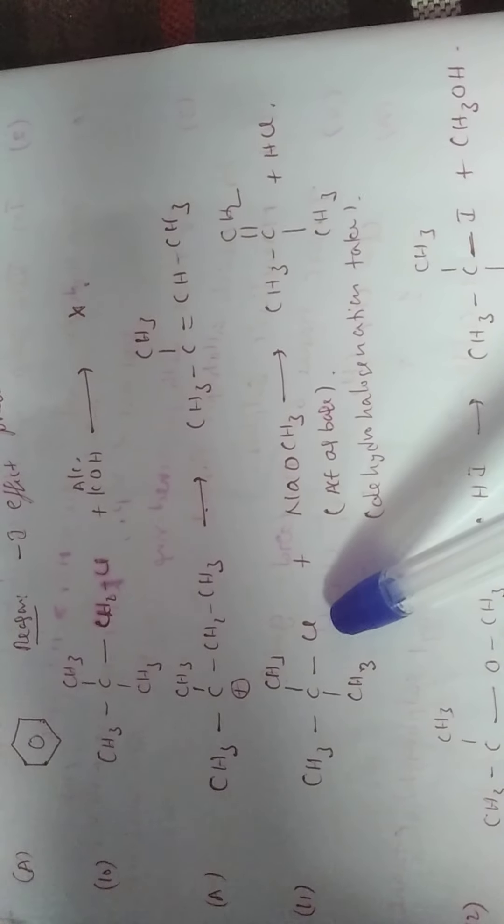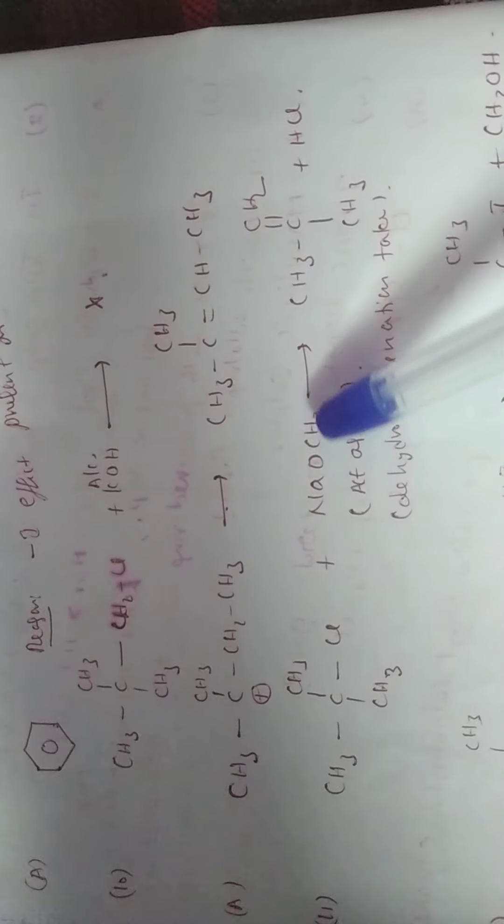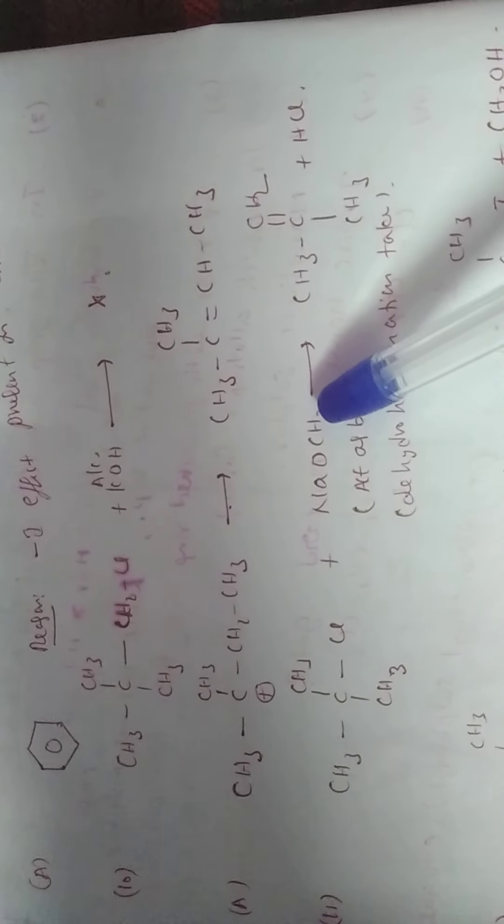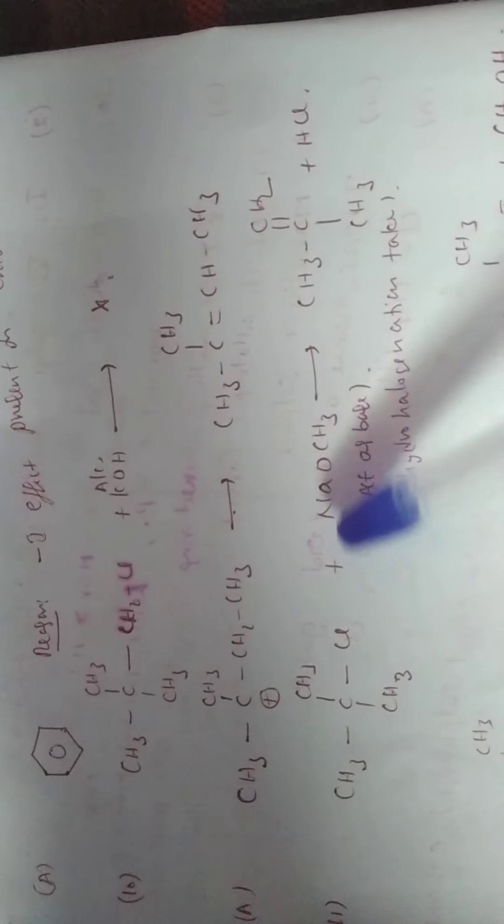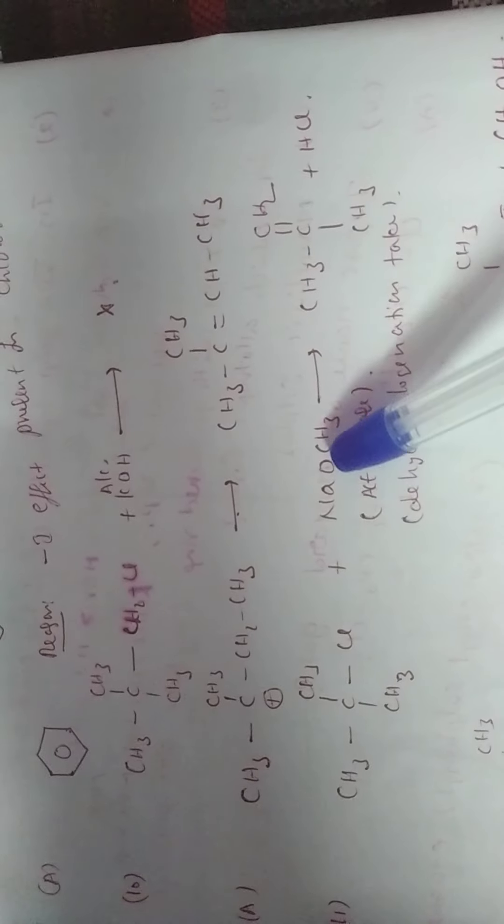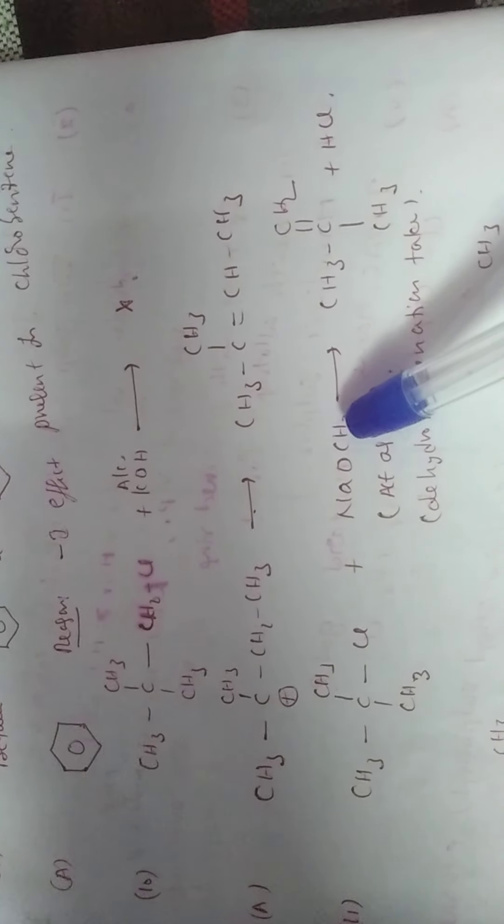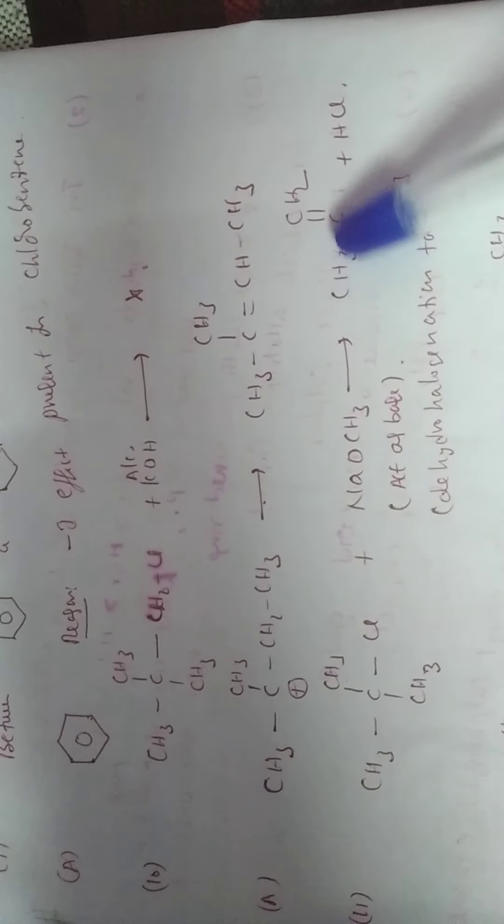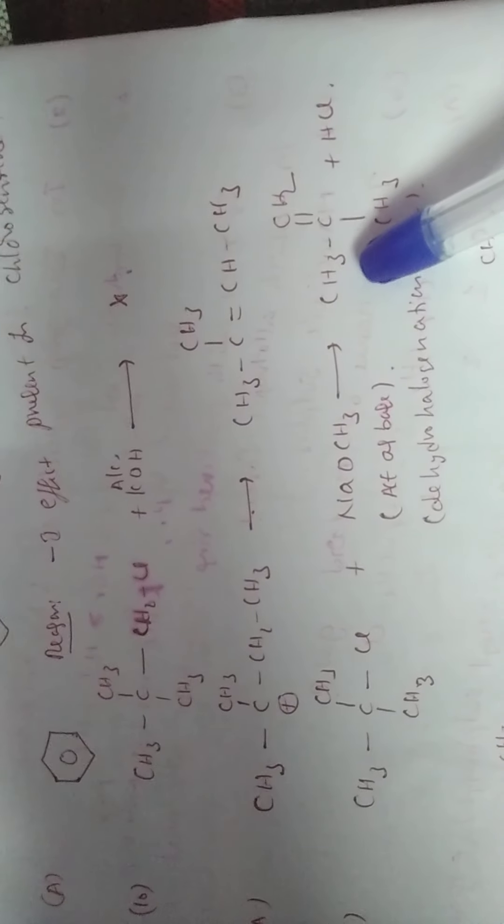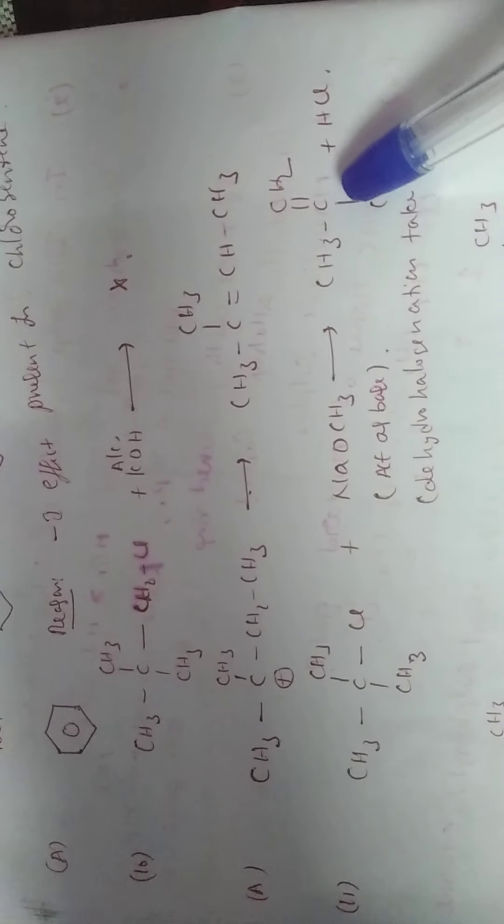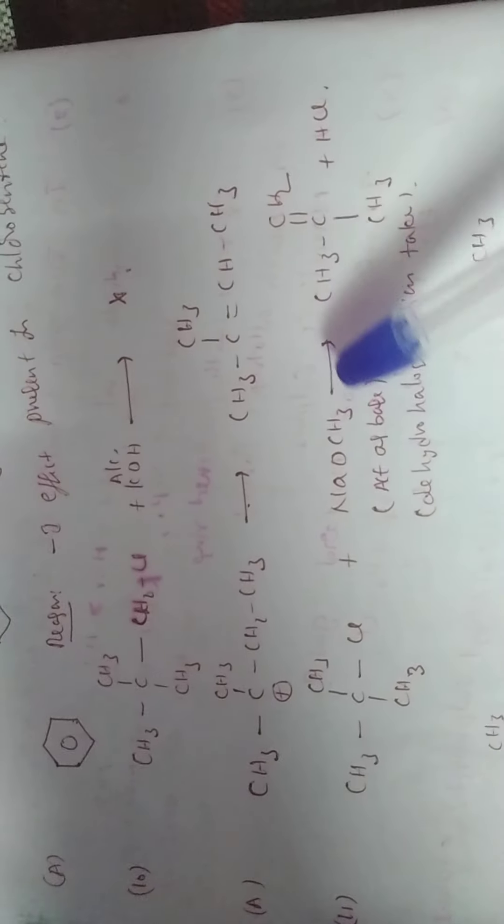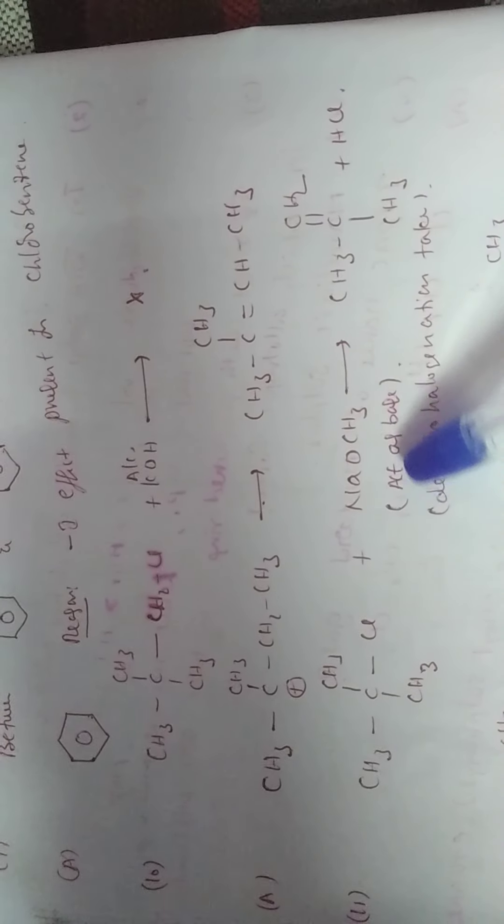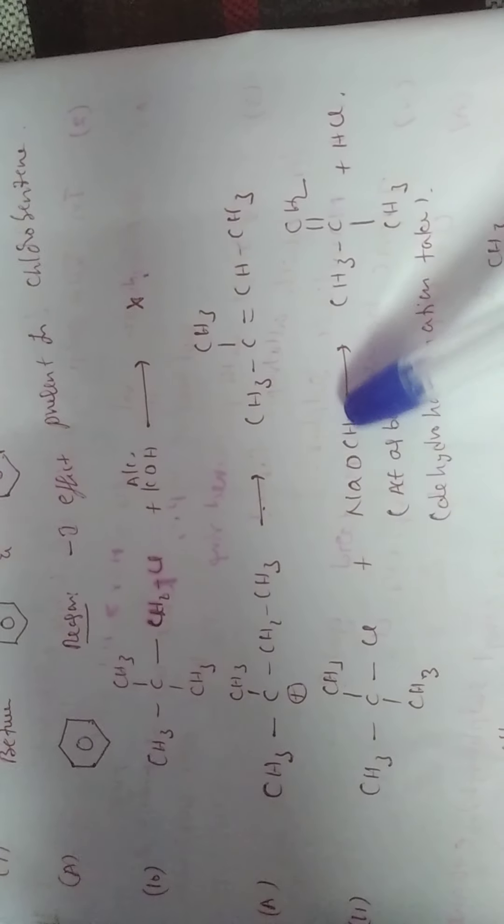Tertiary butyl chloride which on reaction with sodium methoxide. Here expected product is Cl minus replaced by methoxide OCH3 minus. But the product formed is isobutylene.